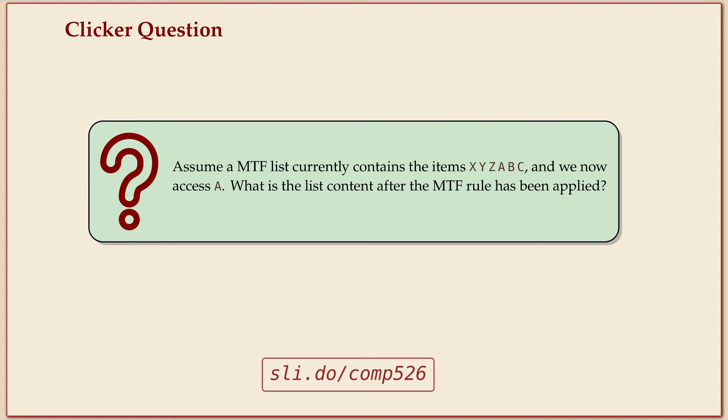Before that I wanted to see if you understood the rule. So pretend you have XYZ ABC in your list initially and then you access A - what does the list look like after?